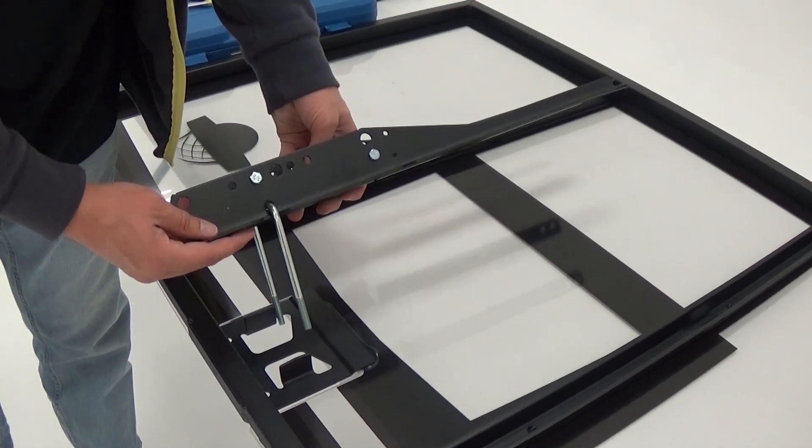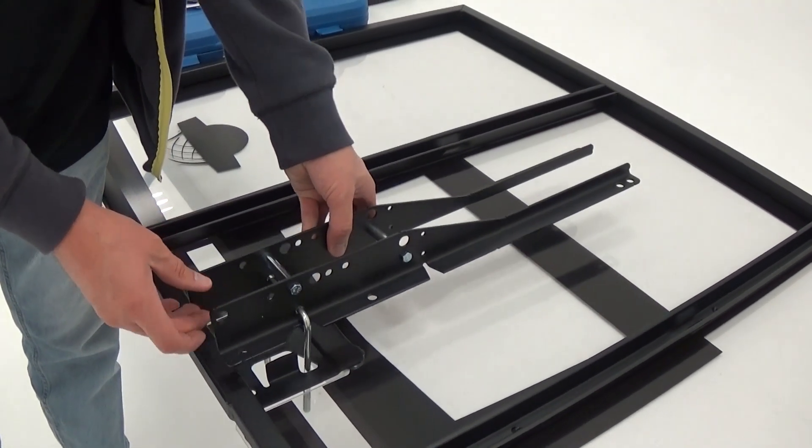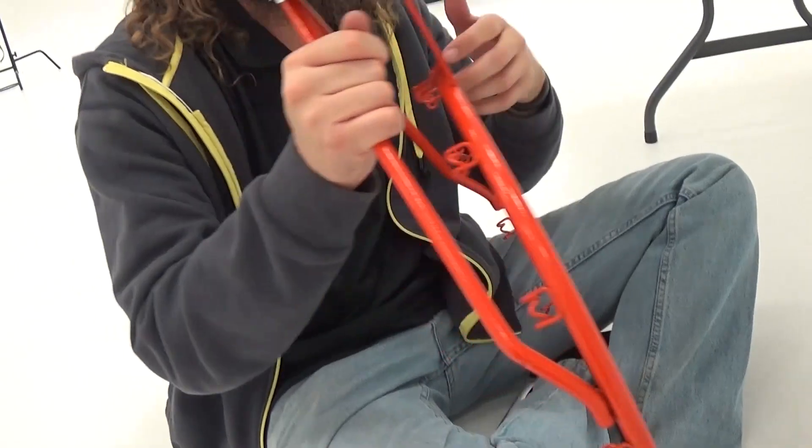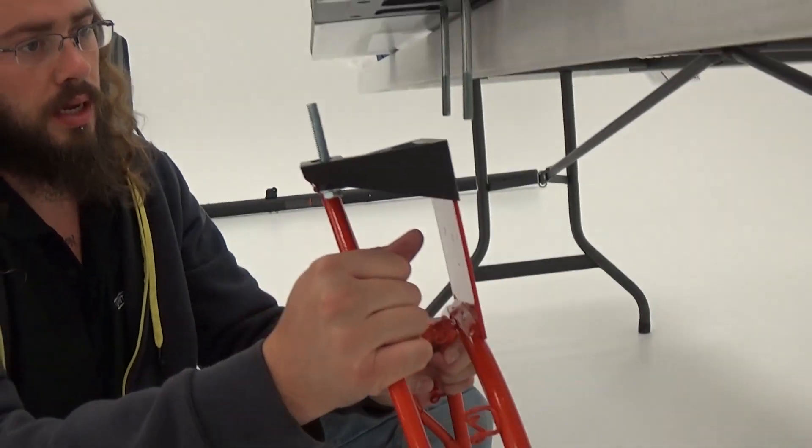Next, line up the backboard brackets with the mounting plate on the back of the backboard. Bring the rim and the plastic guard together and line them up with the plate on the front of the backboard.